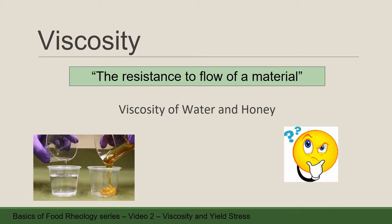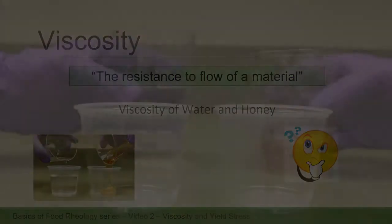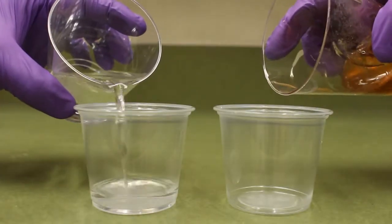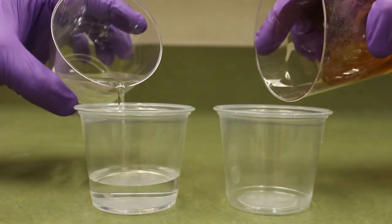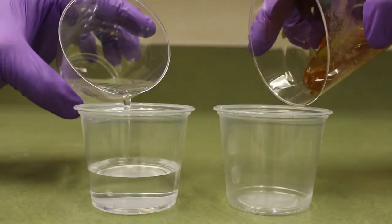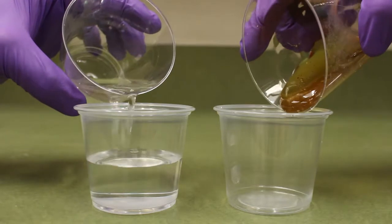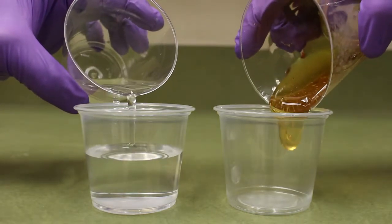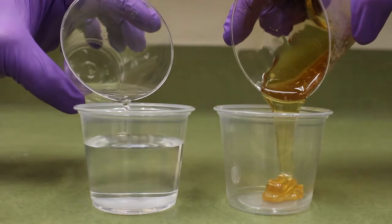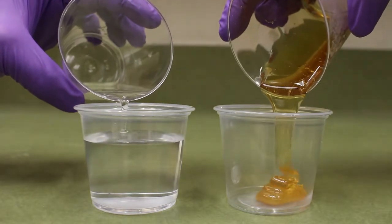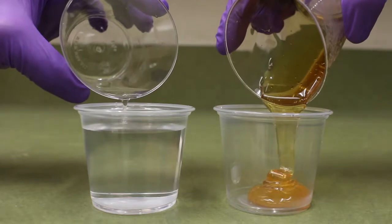What is viscosity? Viscosity is defined as the resistance to the flow of a material. A food material with higher viscosity is more resistant to the flow. Now observe how the water and honey flow in this video. Which one of them needs more time to flow into the cup? Obviously, it's honey. Honey flows very slowly comparing to water, so honey has higher viscosity value comparing to water.